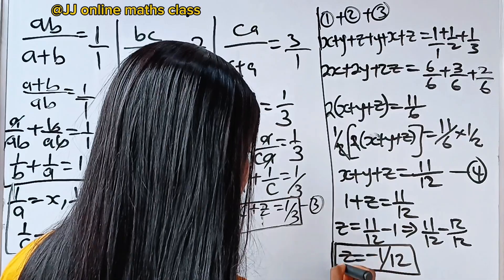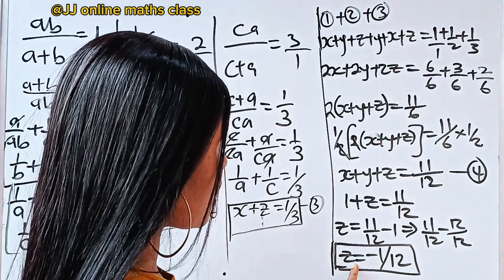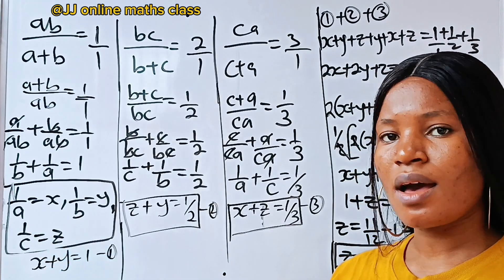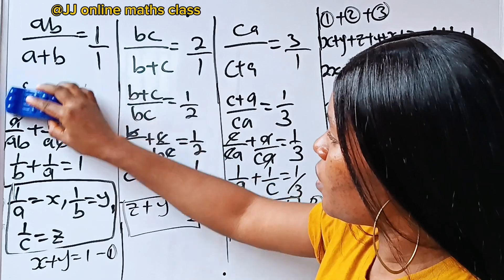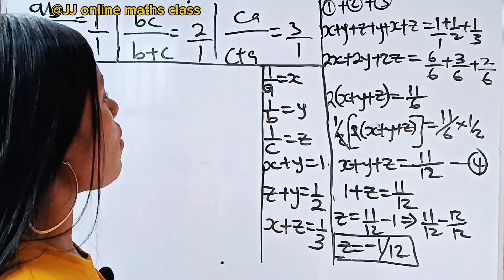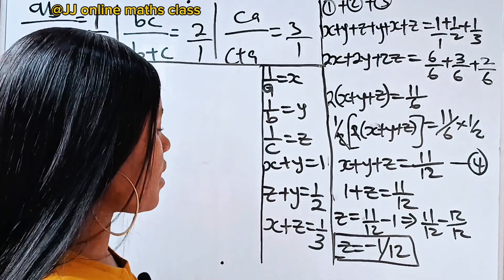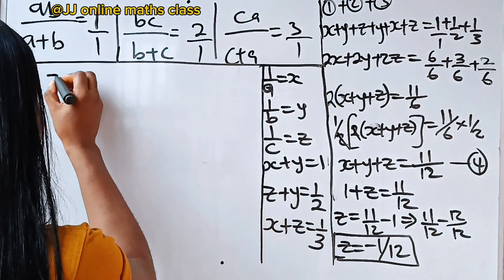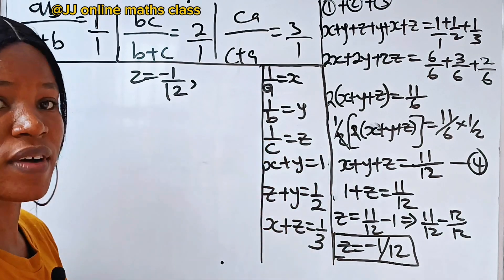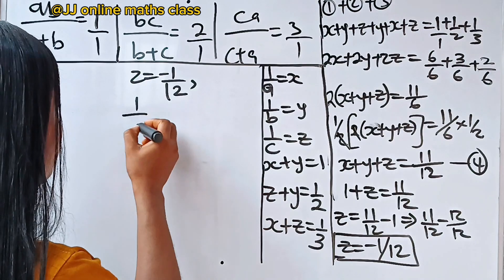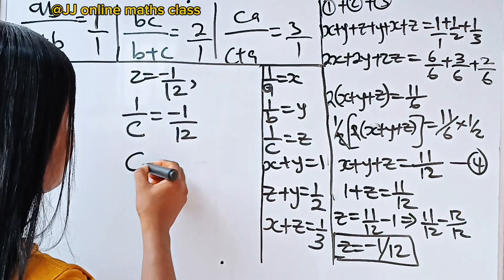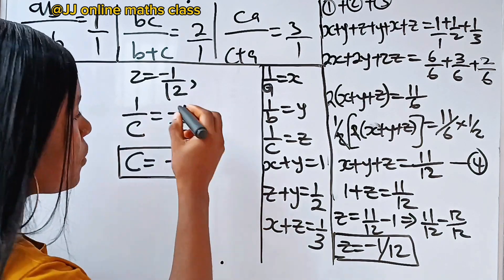That is the value of z. Recall that z is also equal to 1 over c. So 1 over c is equal to minus 1 over 12. Taking the inverse, c is equal to minus 12.